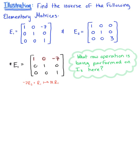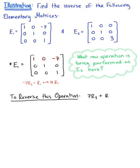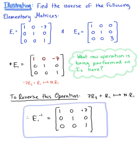Our job is to reverse this operation. To reverse it, we do the opposite: we take 7 times the third row of the identity matrix and add it to the first row to produce the new first row. So the inverse of E sub 1 is the 3 by 3 matrix: 1, 0, 7 in row one; 0, 1, 0 in row two; and 0, 0, 1 in row three. It is the opposite of what E sub 1 is doing, and this is our final answer.